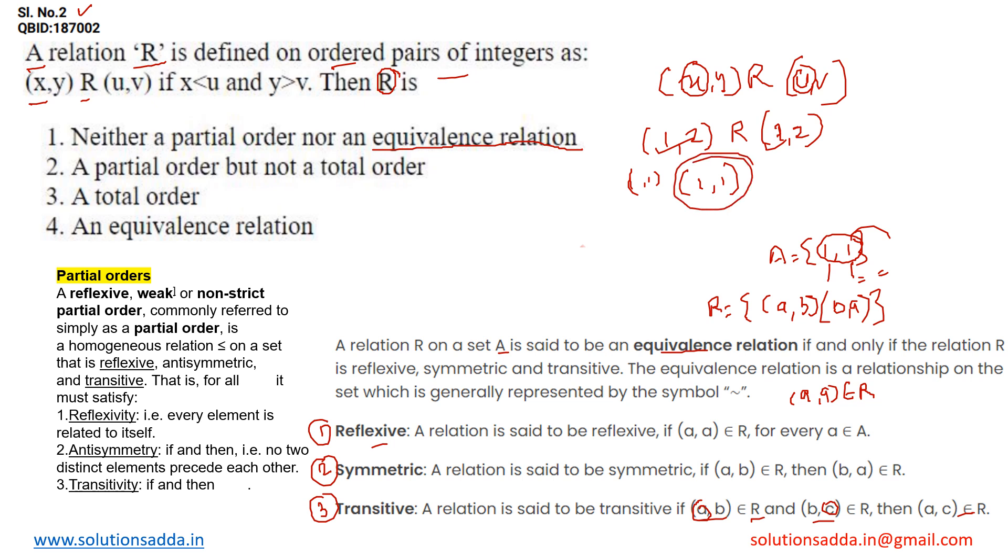We would then need to satisfy the other properties as well, for example symmetric and transitive. So one thing is clear: this is not an equivalence relation. We can eliminate the fourth option because this property will never satisfy the equivalence relation characteristics.